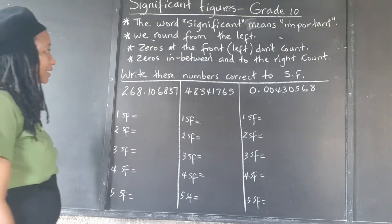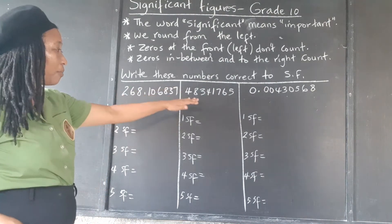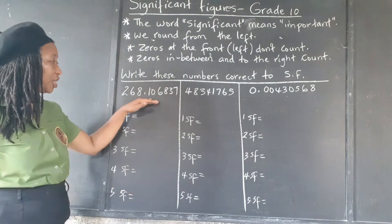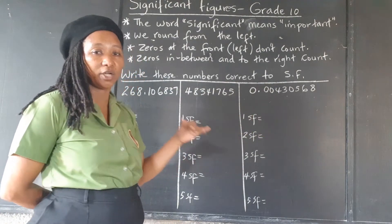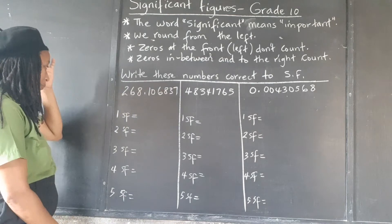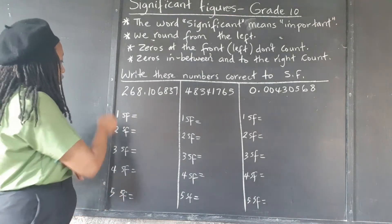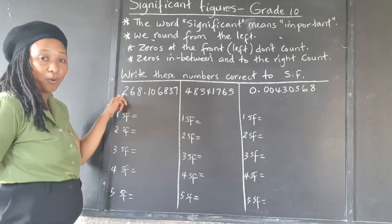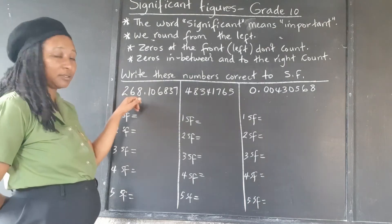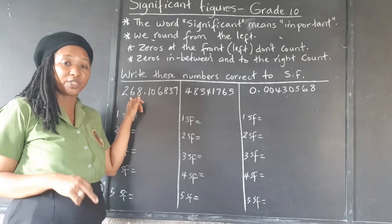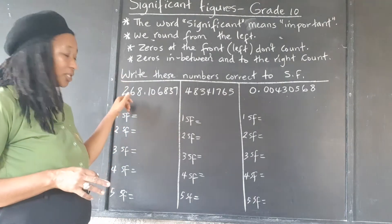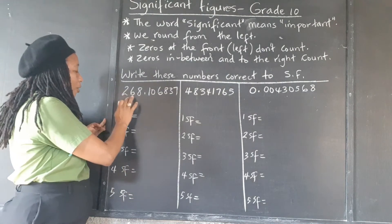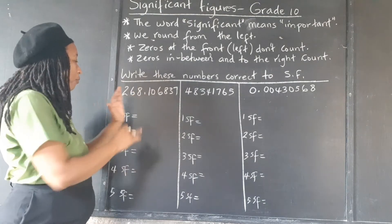All right, so let's go then. With those things in mind, for each of these numbers we're going to round them to one, two, three, four, and five significant figures. So: 268.1068337 to one significant figure. Just one — that's the two. We look to the right of the two. If the number to the right is five or more, we add one to the two. If it is one to four, we don't. The zeros will hold the whole number places and we ignore the decimal.